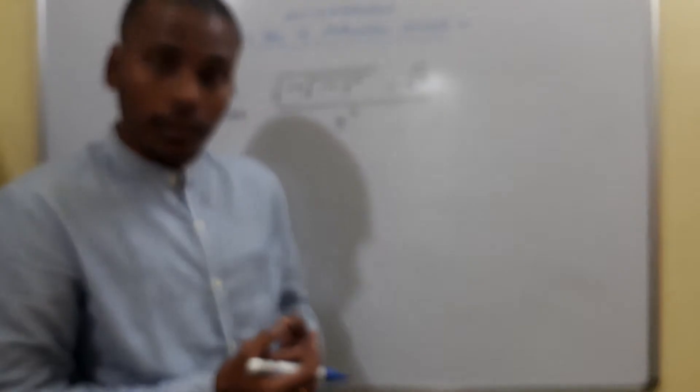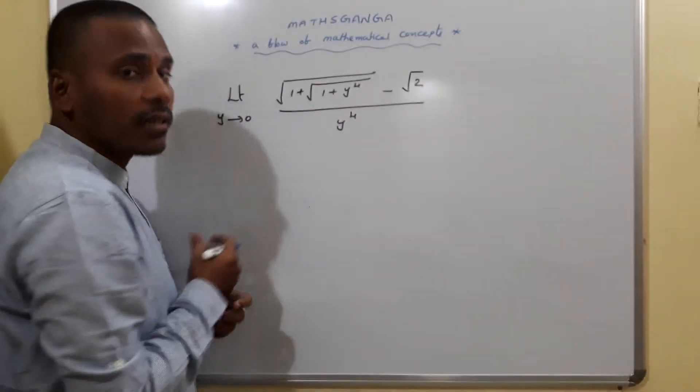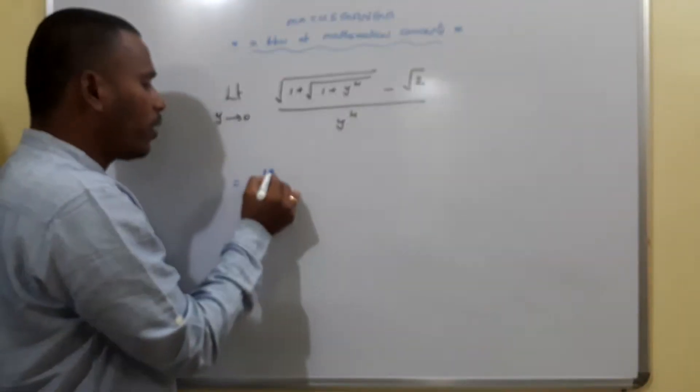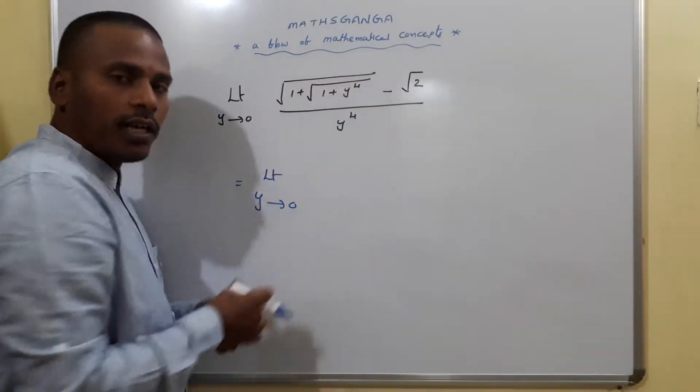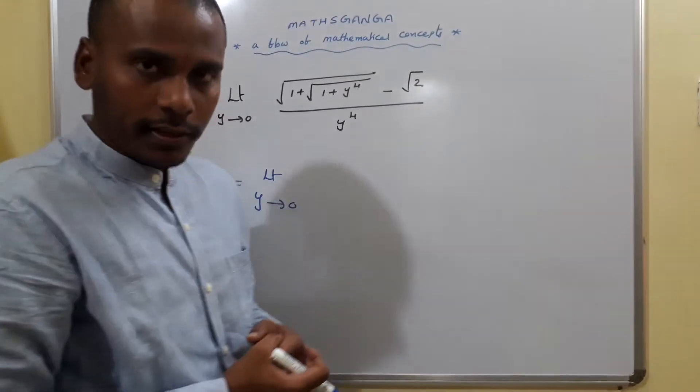Since the problem results as a 0 by 0 format, we go with the L'Hospital's rule. How can we use L'Hospital's rule? Nothing but this result is equals to the limit y tends to 0, the derivative of the numerator divided by the derivative of the denominator.